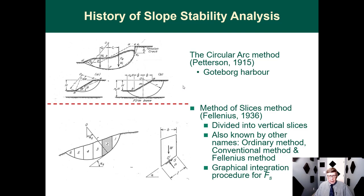Fellenius showed the free body diagram for one slice, placing a normal and a shear force at the base and the weight acting downward. He left off the forces between the slices.